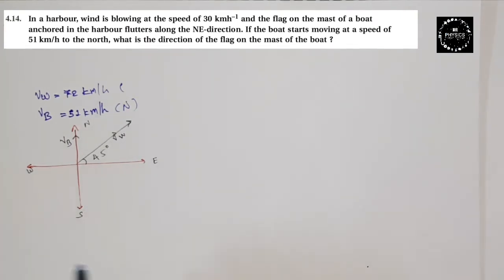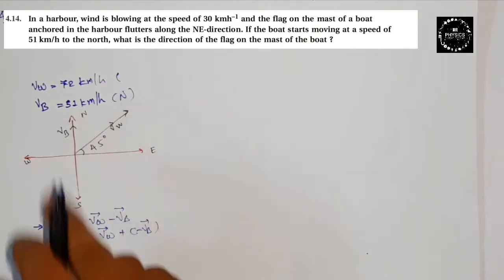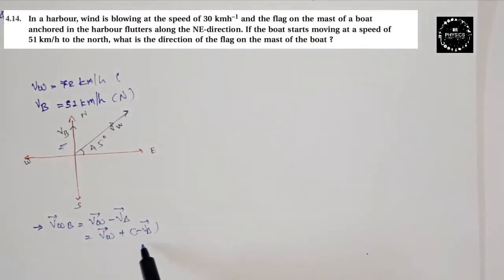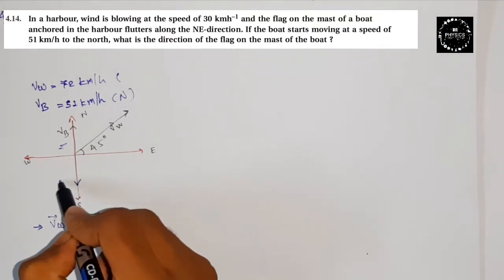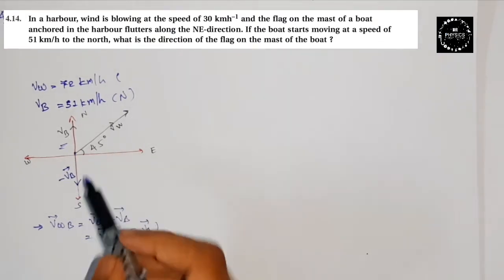You need to understand this a bit carefully. So here we can write, what do we need to define? Velocity of wind with respect to the boat. So you can write velocity of wind minus velocity of boat. From the last example, we did it this way. This minus shows direction. So V_b is in the upward direction. Minus V_b will go downward.